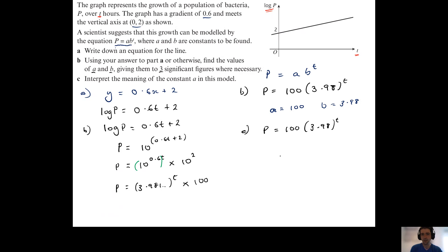What I've got to think about here is, well, what if t equaled 0? If t equaled 0, then 3.98 to the power of 0 would be 1, so that would mean that p is 100 multiplied by 1.